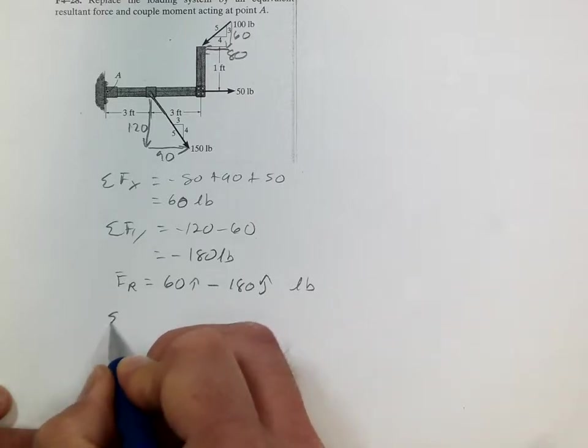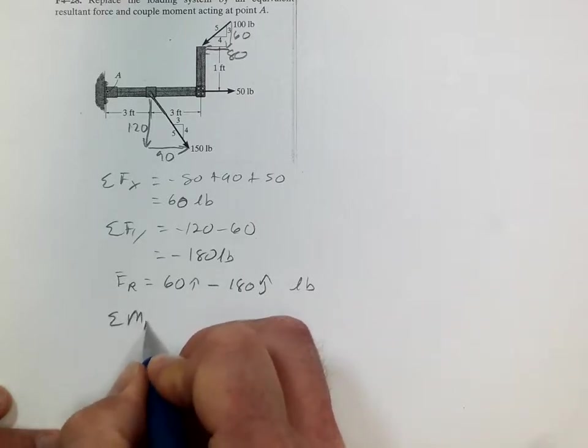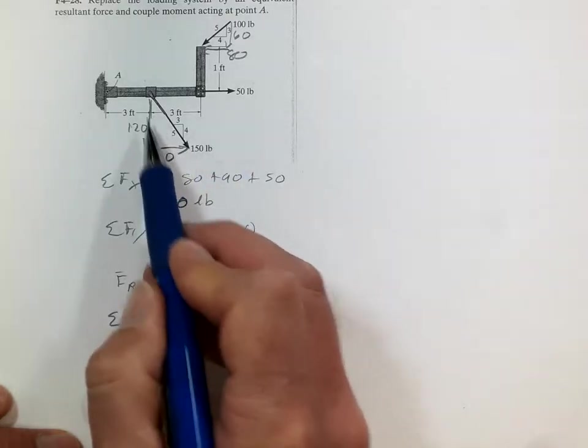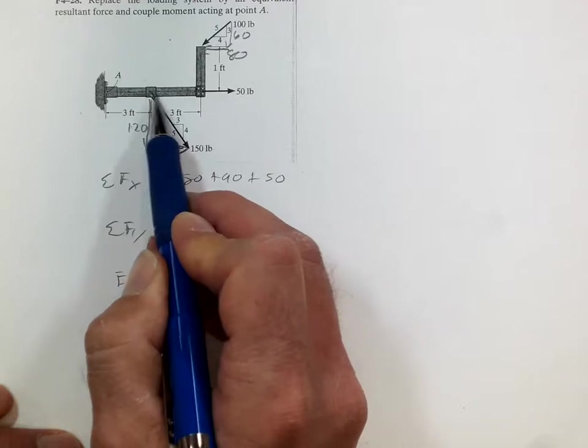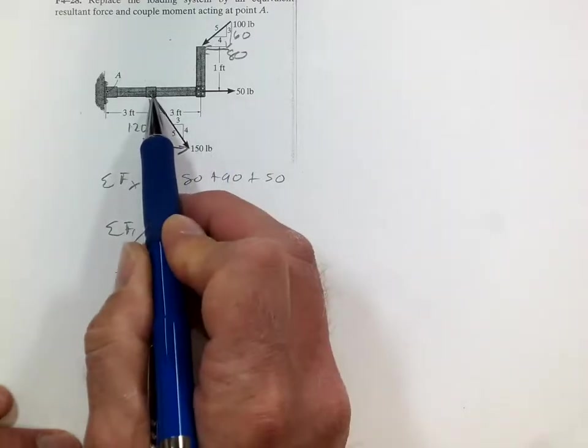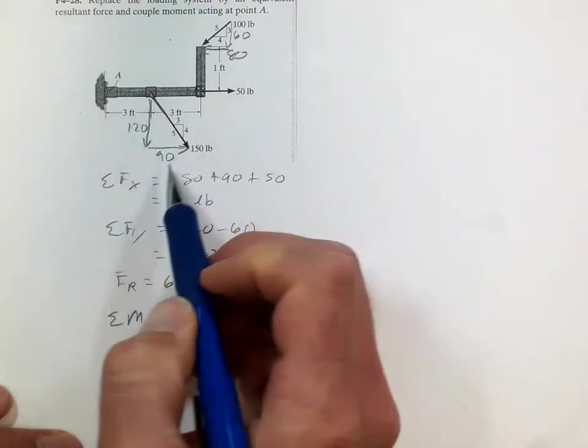Now sum the moments about A. The first thing we have right here at this point, the 90 is drawn out here, but it actually goes through there. So it goes through A, so it doesn't have any effect.